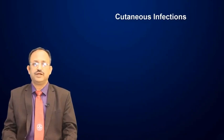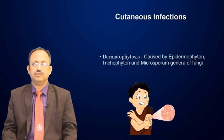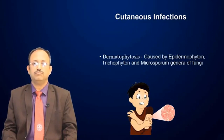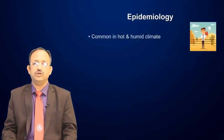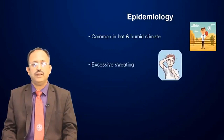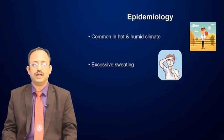The other cutaneous superficial infections produced by dermatophytes, we call them dermatophytosis, mainly caused by three genera: Epidermophyton, Trichophyton, and Microsporum. There are various species in these genera. It is common in hot and humid climates and common in individuals who sweat excessively, especially manual laborers or those who work in hot and humid climates.